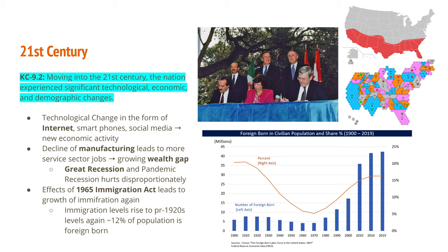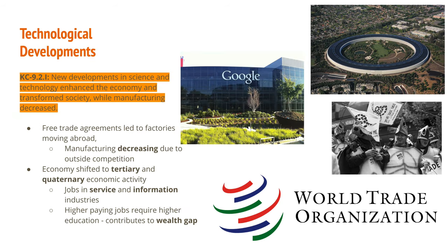Regarding demographic changes, the 1965 Immigration Act led to renewed growth in immigration. The chart shows a dip going into the 1960s, then a rise to where the foreign-born population is approximately 16 to 17 percent today — though immigration levels will not return to pre-1920s highs, which were around 12 percent. For technological developments, advances in science and technology enhanced the economy and transformed society while manufacturing decreased.